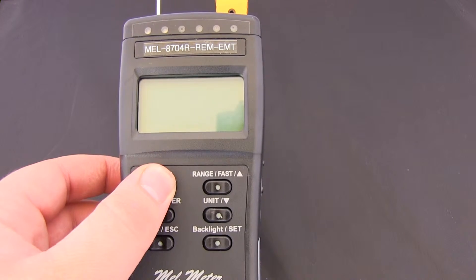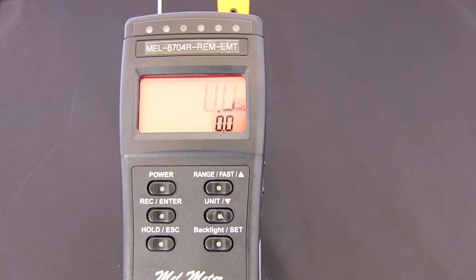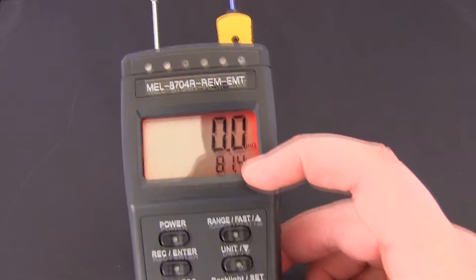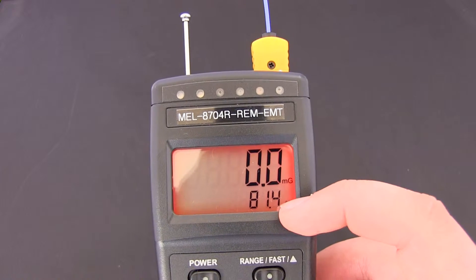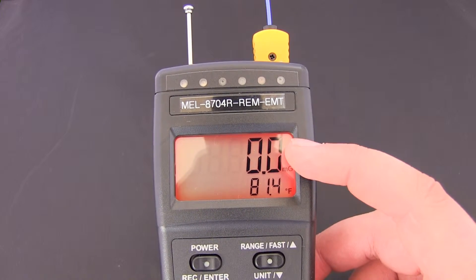So if we go ahead and turn on our EMF Mel meter as normal. As you can see we have got our temperature, if we just go ahead and set it down here. We have our temperature here and we have our EMF setting here.